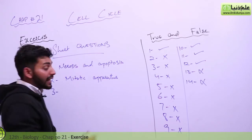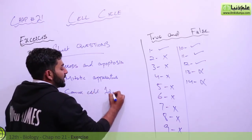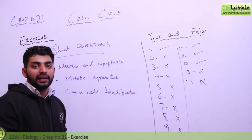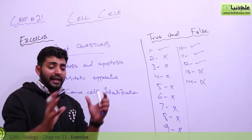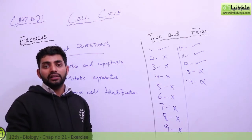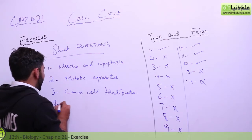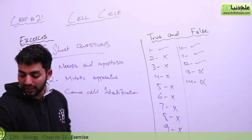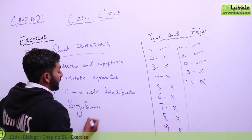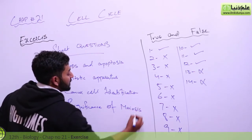Third short question: how can you identify cancer cells? Cancer cells differ from normal cells in their characteristics and behavior. Fourth short question: what is the significance of meiosis? We have learned that meiosis results in genetic recombinations and variations across generations.